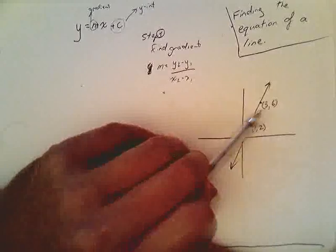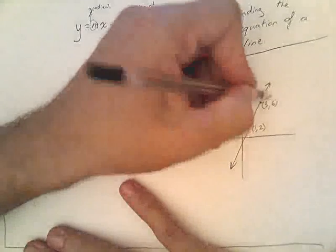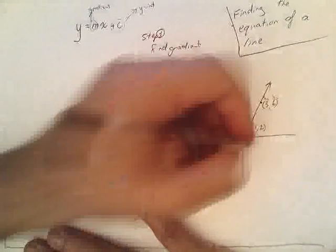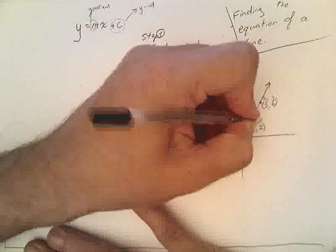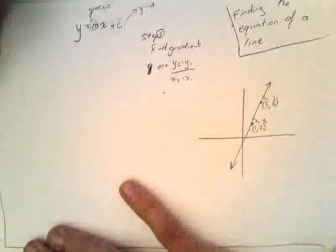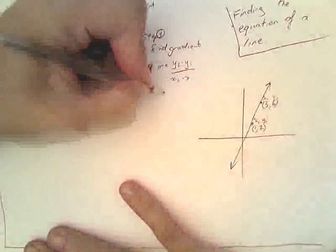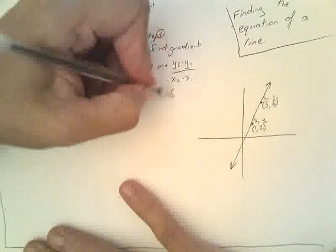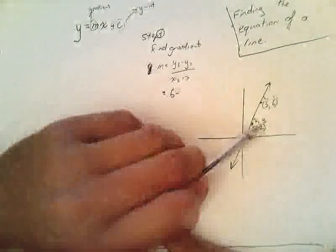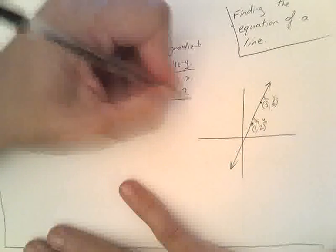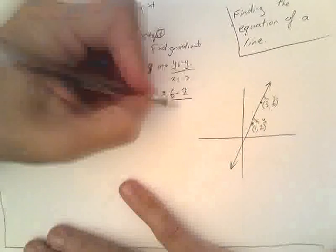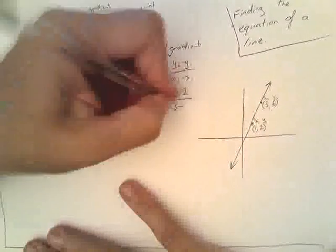Now, I'm going to call this point 2. So, that's x2, y2. And I'm going to call this point 1. So, that's x1, y1. Now, I'll just put my values in. So, y2 is 6 minus y1, which is 2, over x2, which is 3, minus x1, which is 1.